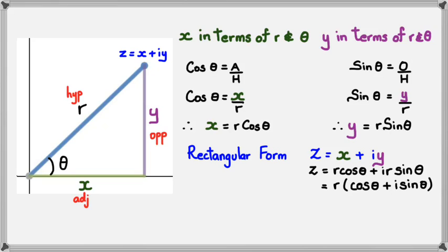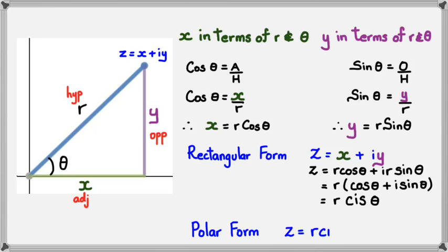Being mathematicians, we like shortcuts. We write cos theta plus i sine theta in a fast way as 'cis theta'. So when you see 'cis', it means cos theta plus i sine theta. Rectangular form is x plus iy, and in polar form it's Z equals R cis theta, where cis theta is the cos plus i sine part.